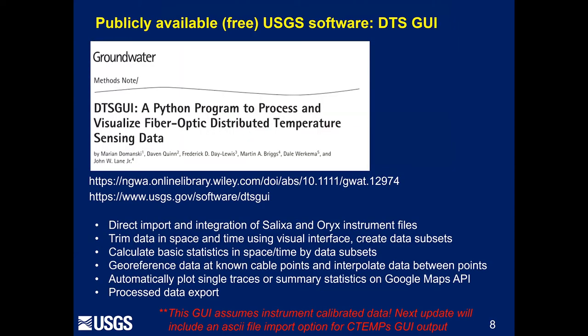To help us process this data and do it quickly in the field as the data is coming in, as well as run some simple statistics that may indicate preferential groundwater surface water exchanges and other aspects of the data you might be interested in — this GUI is applicable to other types of applications beyond the river corridor. We've got this DTS GUI that was released earlier this year. This is free software, and it's based right now around the Silixa and Oryx instrument files.